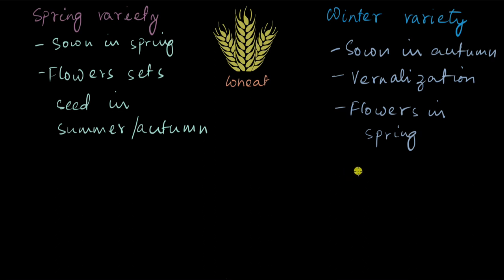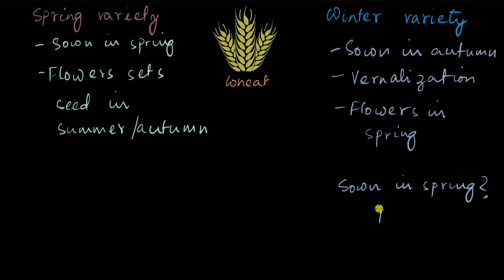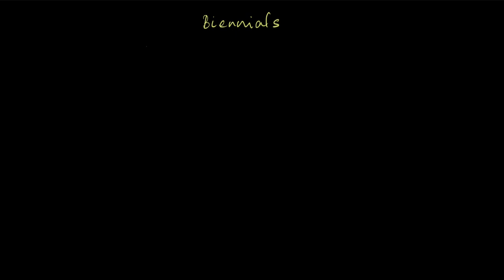Now, what if the winter variety is sown in spring — what will happen then? Well, it can't flower in summer or autumn, because it is built in a way that it has to undergo vernalization. It has to go through the cold temperatures of winter before it can start flowering. So it will not flower if sown in spring; it has to go through winter of that year, and only after that — the next year — can it flower.